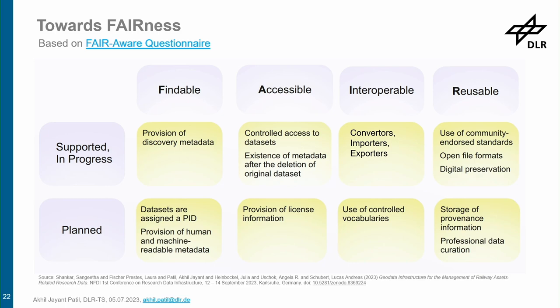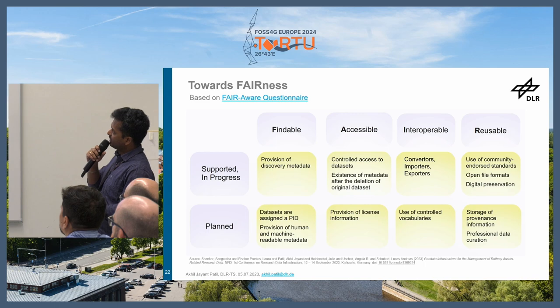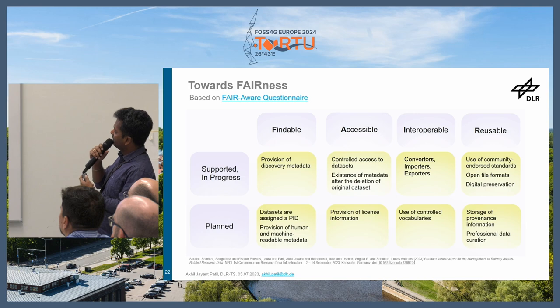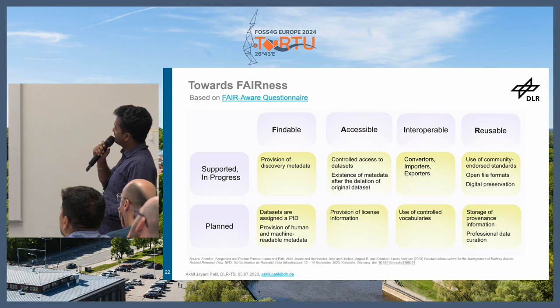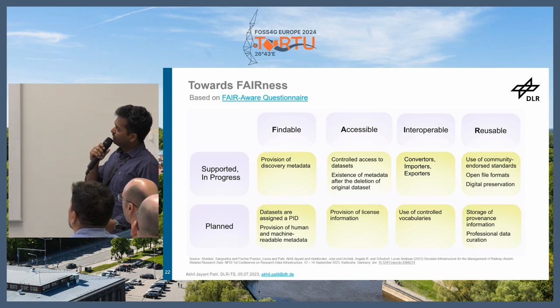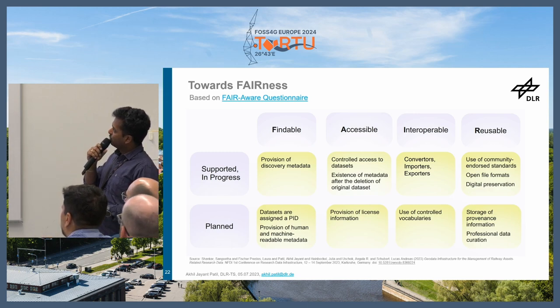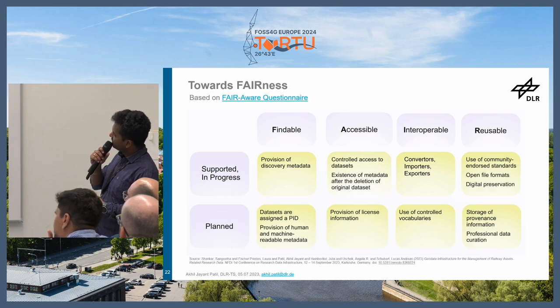This is the FAIR matrix. We know the principles of FAIR, and we have already covered certain aspects: finding datasets through metadata, controlled access, interoperability through converters and importer-exporters, and reusability through community standards and open file formats. There are many things we have planned, and many we have actually started just a few months into this year.